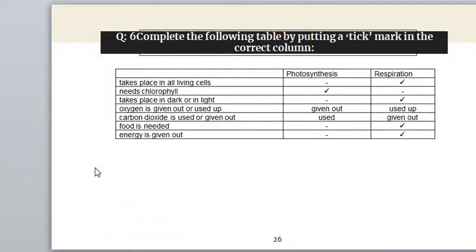Now for Question Number 6: 'Complete the following table by putting a tick mark in the correct columns.' There are two columns — Photosynthesis and Respiration. The first statement is: 'Takes place in all living cells.' Photosynthesis requires chlorophyll and sunlight so it does not occur in all living cells. The correct answer is Respiration.